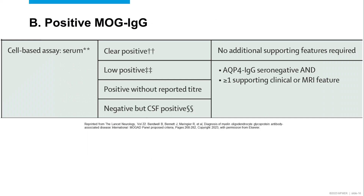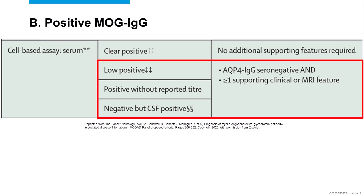The second required part is a positive MOG IgG. If you have a clear positive — a strongly positive MOG IgG — then you don't need any additional supporting features. All you need to do is move to step C, which is to exclude alternative diagnoses. On the other hand, if you have a low positive MOG antibody in the serum, or if you have a positive result but no titer reported, or if your blood result is negative but you have a CSF positive result, then you need additional criteria. One of those is you need to be negative for the aquaporin-4 antibody, and then you need at least one supporting clinical or MRI feature.